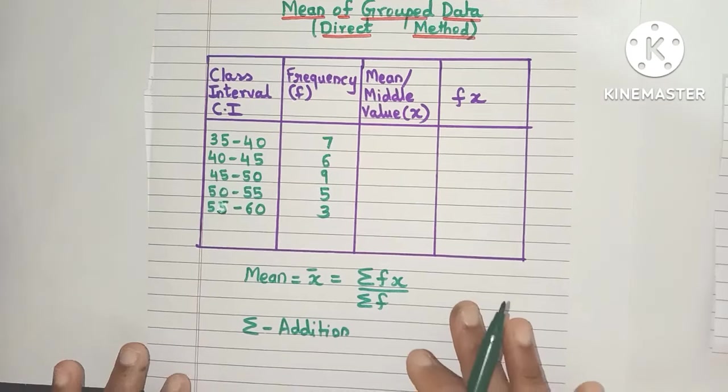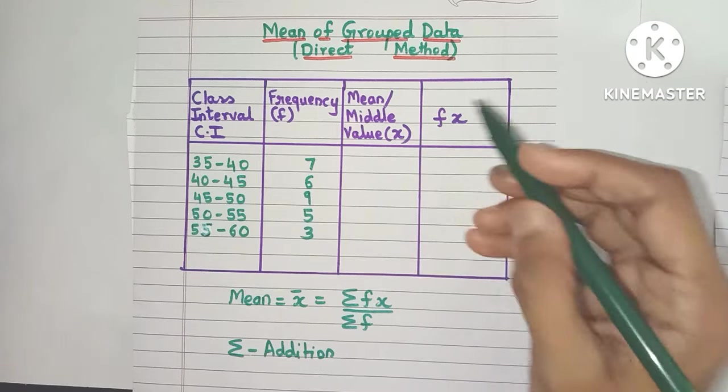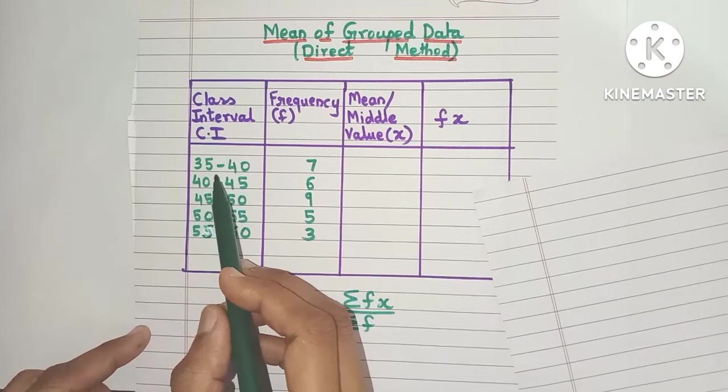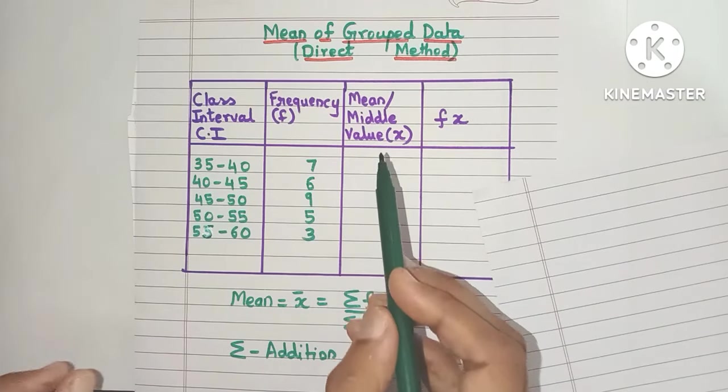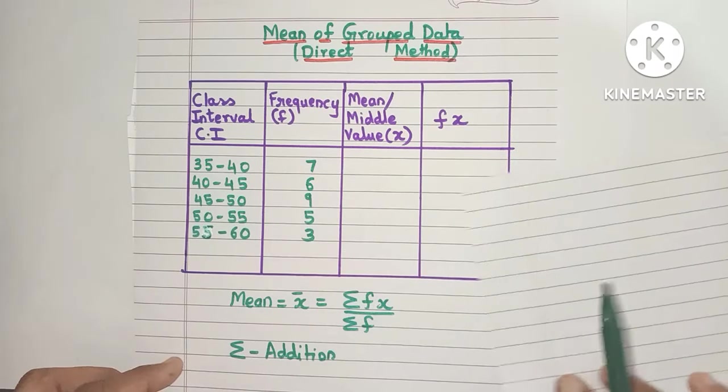Before we can use this formula, we need two more columns. The first column is the x column. What is x? x is the mean or the middle value. We find x by adding the upper limit and the lower limit and dividing it by 2.